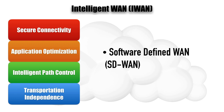This gives us all those things: transport independence, intelligent path control, application optimization, and the ability to maintain security and push out security policies to multiple branch office routers — allowing us to administer large WAN deployments by combining iWAN with SDN technologies. That combination is called SD-WAN.